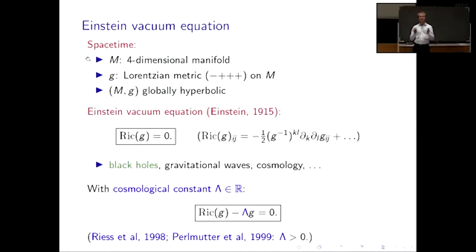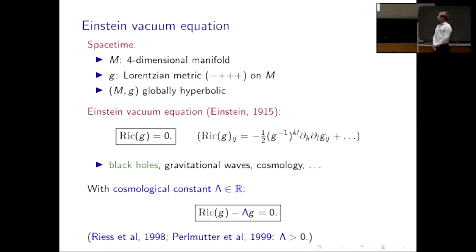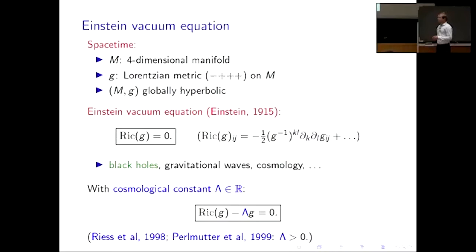The context of my talk is the Einstein vacuum equation, and I will be interested in stability problems in general relativity. To set this up: what is the spacetime, which will be the unknown for the Einstein vacuum equation? It's a four-dimensional manifold — I'll give some relevant examples later — and on that manifold you have a Lorentzian metric with signature convention minus plus plus plus, and a global causality condition called global hyperbolicity.